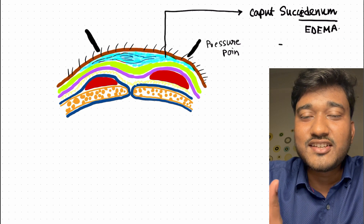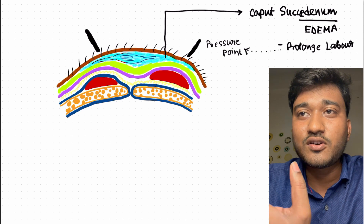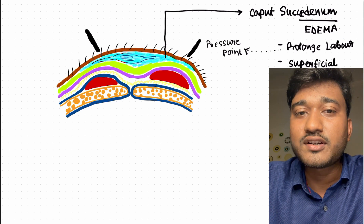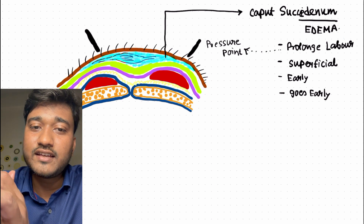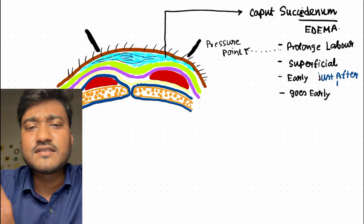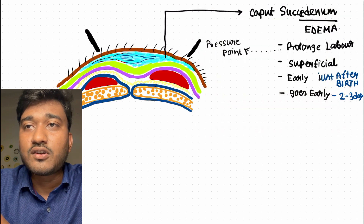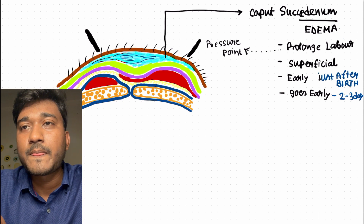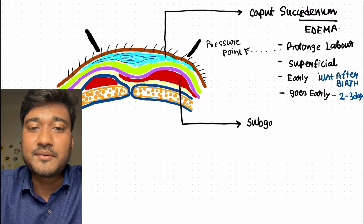In the word 'succidaneum' you can remember that it is only edema — it's not blood, it's tissue fluid. This is the most superficial of the three. It occurs due to prolonged labor. Being superficial, it appears early — just after birth, within a few hours — and it also goes early, resolving within two to three days.